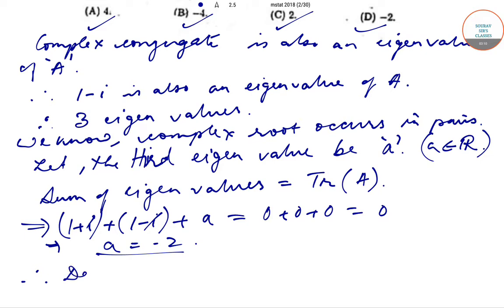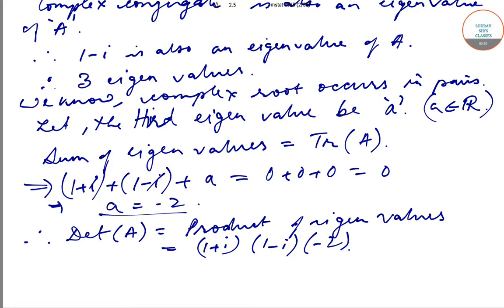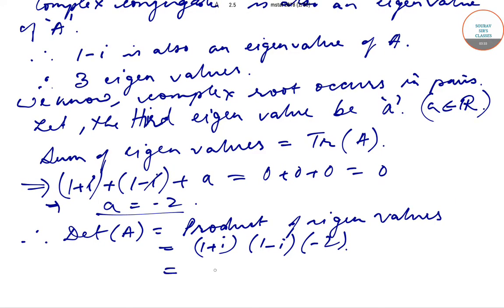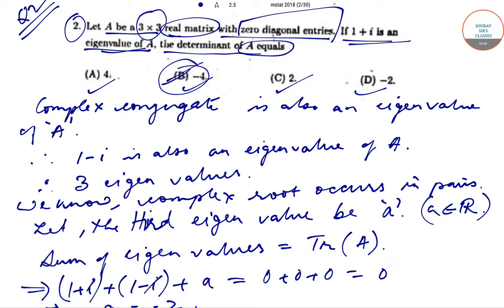We also know that the determinant of matrix A equals the product of eigenvalues. Therefore, det(A) = (1+i)(1-i)(-2). Since (1+i)(1-i) = 2, we get 2×(-2) = -4, which is option B.